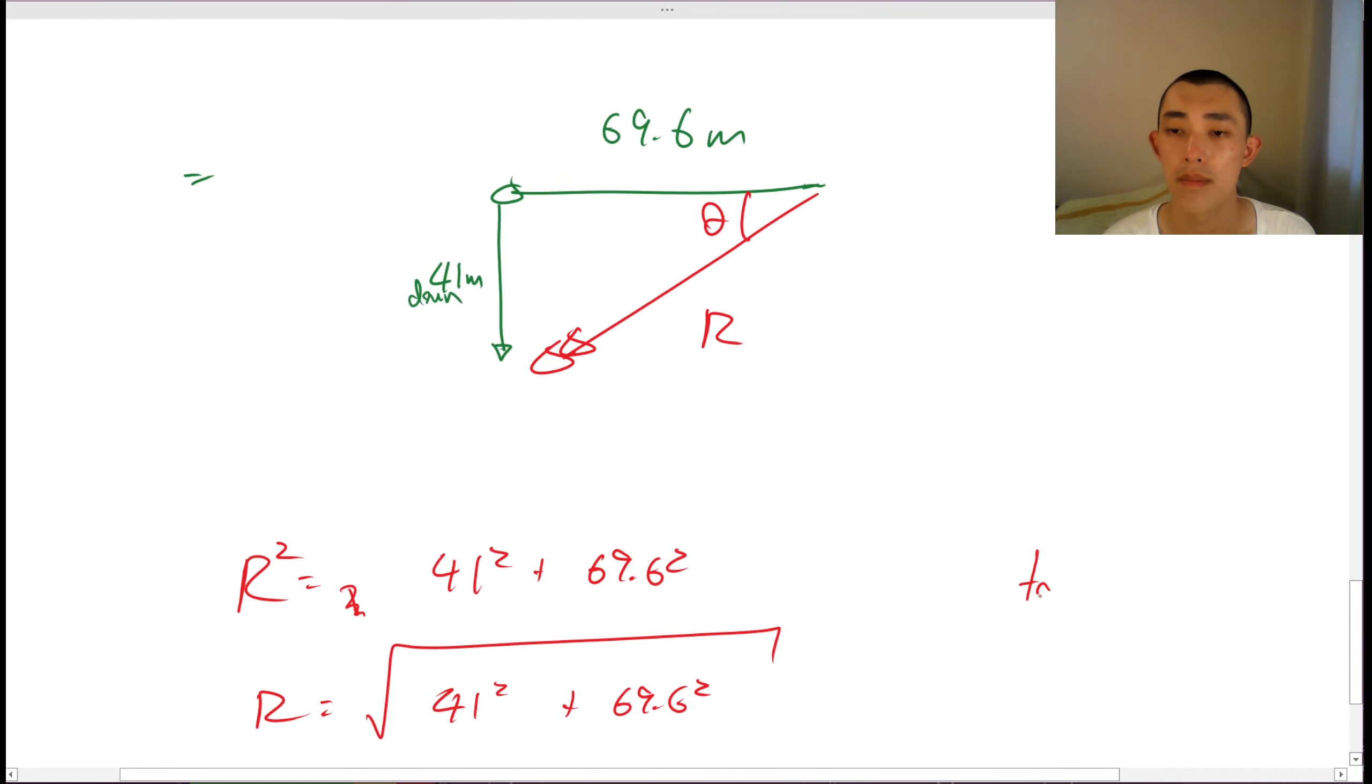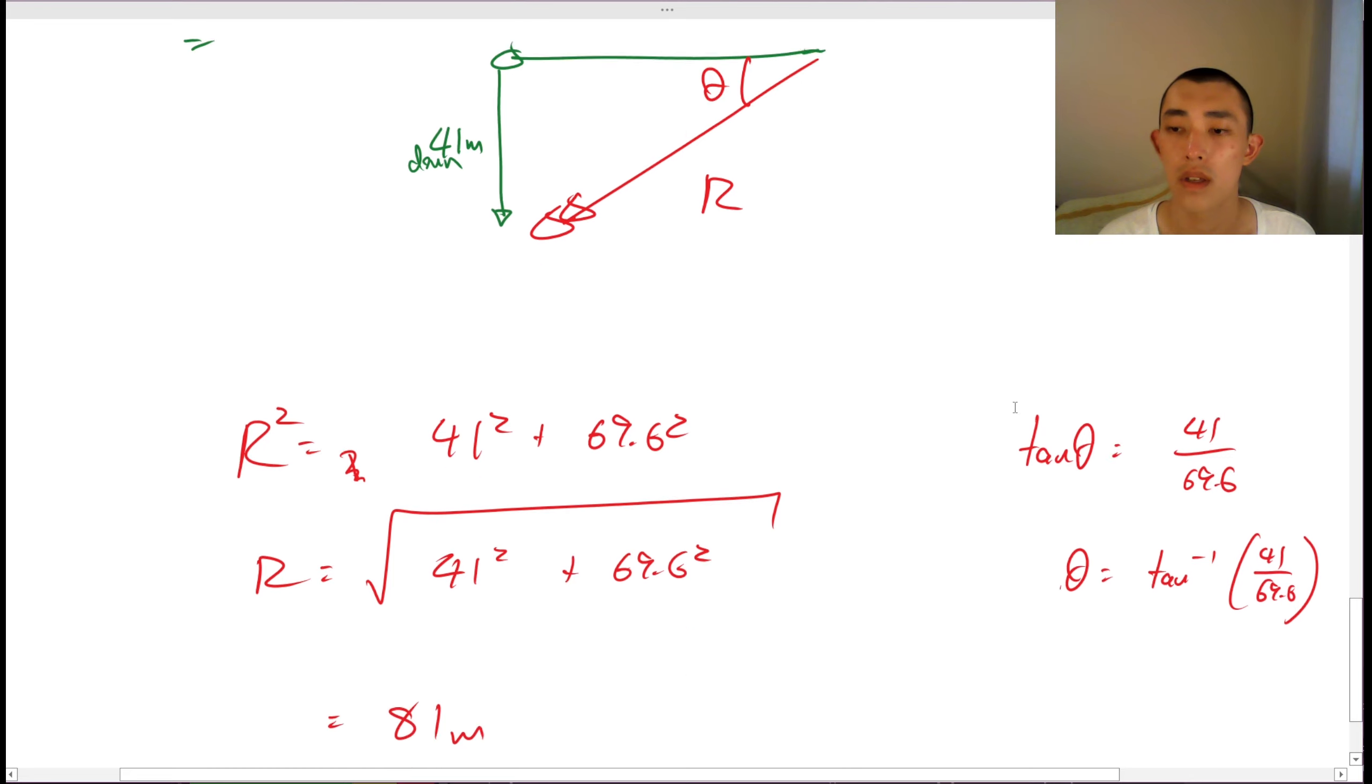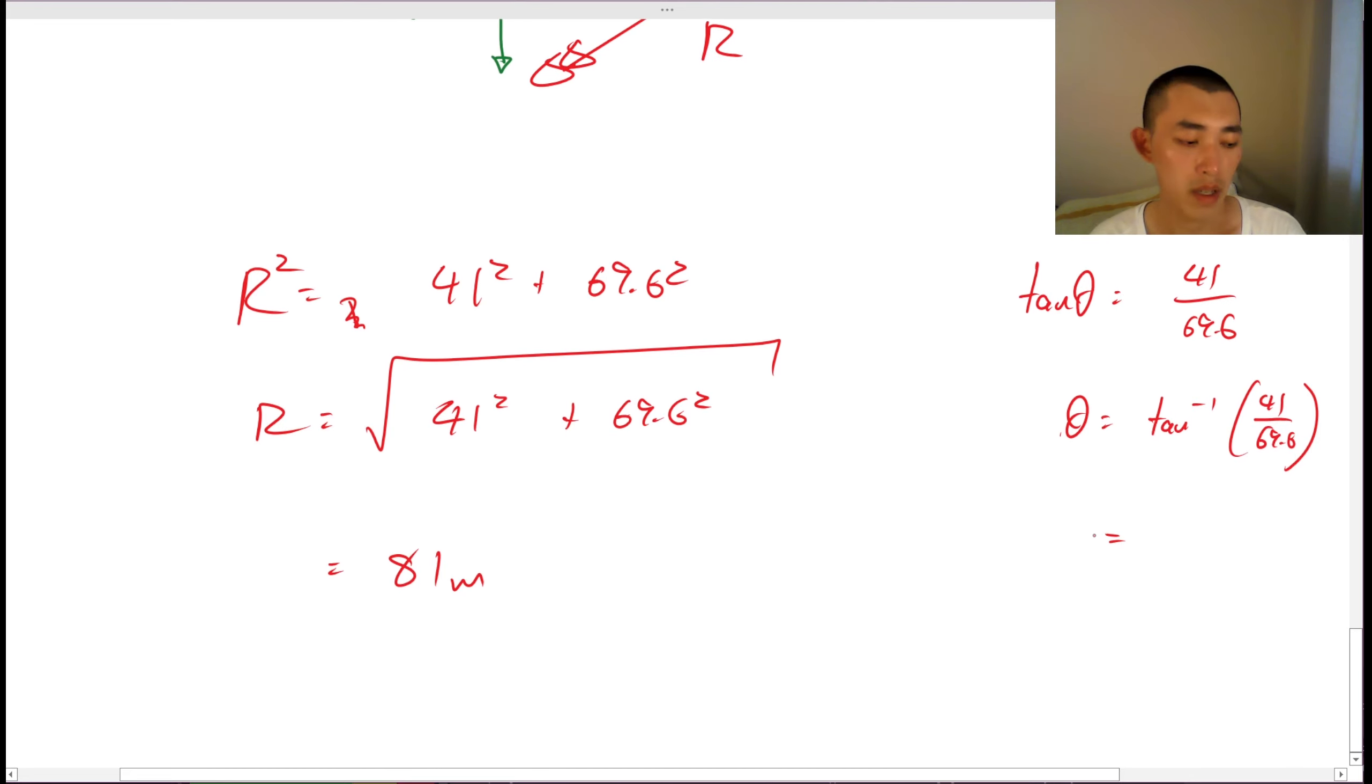Tan theta is equal to the opposite over adjacent. The theta is equal to tan inverse of my 41 over 69.6. Which is going to give me 31 degrees.